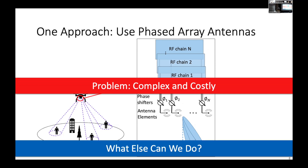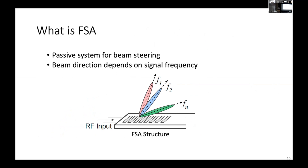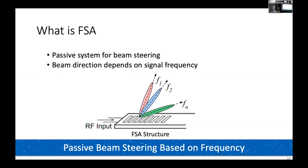In our solution we use what is called a frequency scanning antenna, or FSA. At a high level, FSA is a passive structure that allows you to steer the direction of the beam, where the direction of the signal depends on the frequency of the input signal. FSA allows passive beamforming based on the change of signal frequency, and it doesn't use any phase shifters or active components, so it has very low complexity in system design.